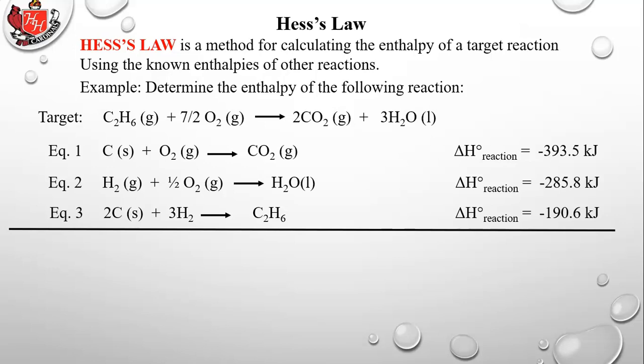We're going to create the target equation out of these three equations. In doing so, we'll have to multiply, add, or otherwise manipulate the enthalpies on the right. That will give us, at the end of the problem, the final enthalpy of the target equation we're trying to find.